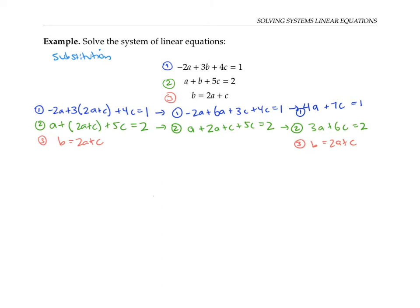Notice that my first two equations now have only the variables A and C in them. Once again, I'll solve for one variable — say A — in one of the equations, say the first one, and then substitute that into the second equation. So in the first equation, I have four A equals one minus seven C, so A equals one fourth minus seven fourths C. And I'll plug that into the second equation, so everywhere I see an A, I'm going to put in one fourth minus seven fourths C.